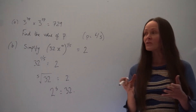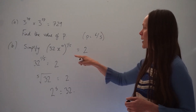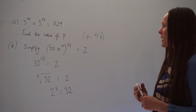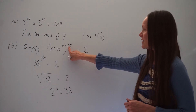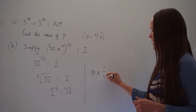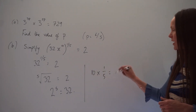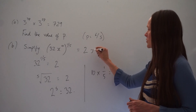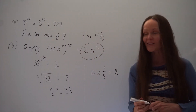Now look at what happens to the power on x. Whenever you have brackets with a power outside, you multiply the powers together. So we multiply 10 by 1 fifth — that's the same as 10 divided by 5, which is 2. So the power on x changes to 2, and the final answer is 2x squared.